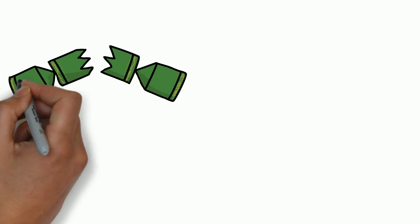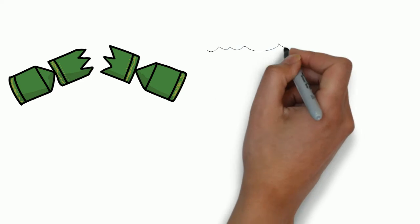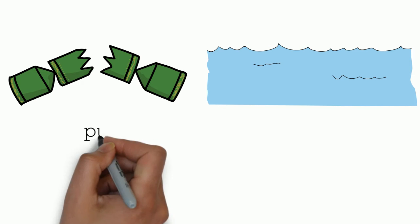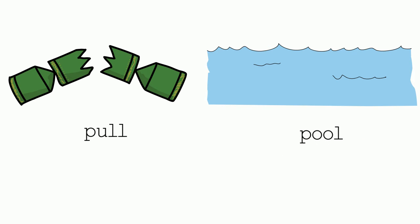The next mistake is quite similar. The words here are pull (short) and pool (long). Chinese speakers, be careful with the short u and long u sounds. Check out the lesson for more detail.